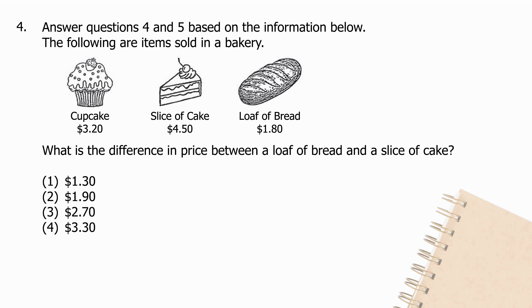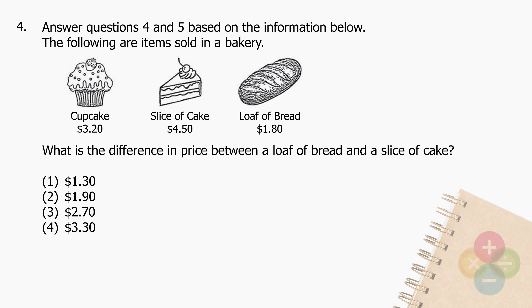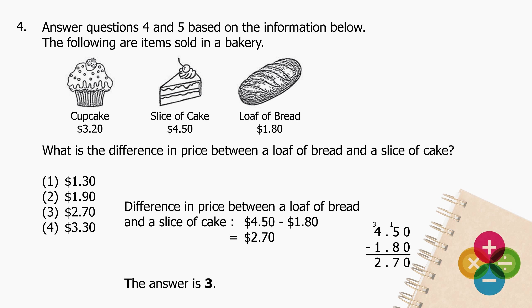Question 4: Answer questions 4 and 5 based on the information below about items sold in a bakery. What is the difference in price between a loaf of bread and a slice of cake? Subtract $1.80 from $4.50 and the difference is $2.70. The answer is 3.